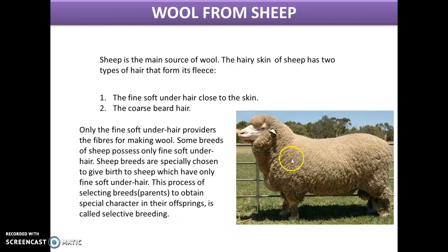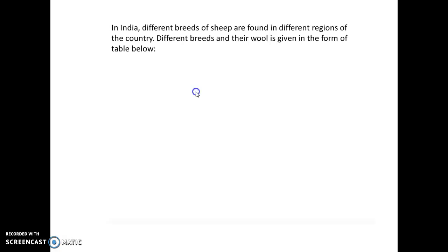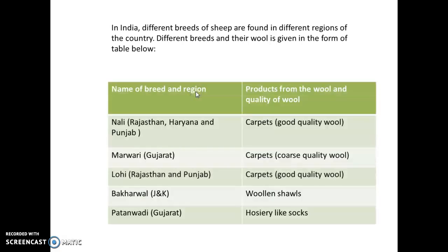The finest wool is obtained from the Merino sheep, which is a native of Spain. India ranks third in the population of sheep after China and Australia. In India, different breeds of sheep are found in different regions of the country.